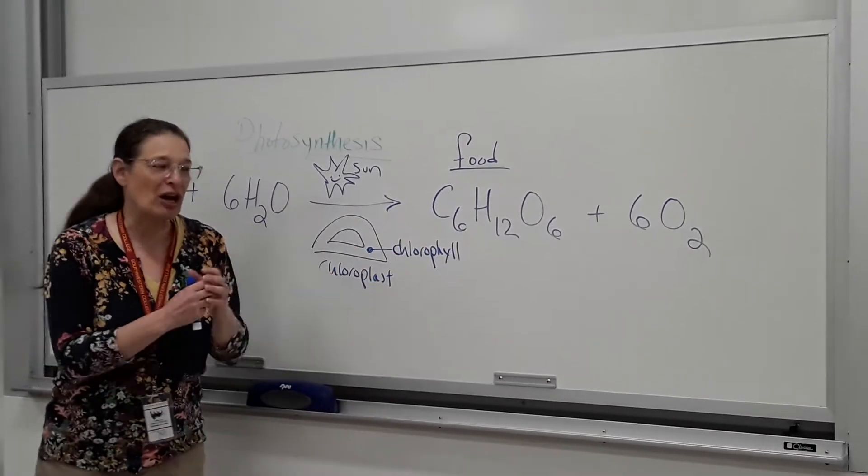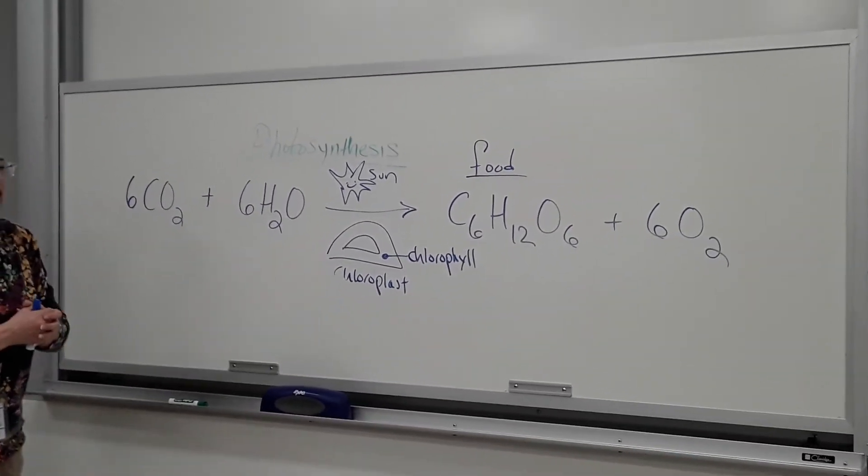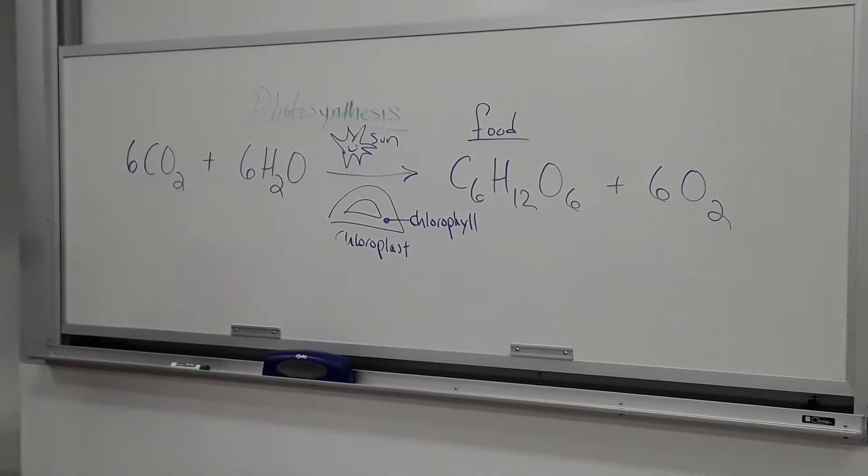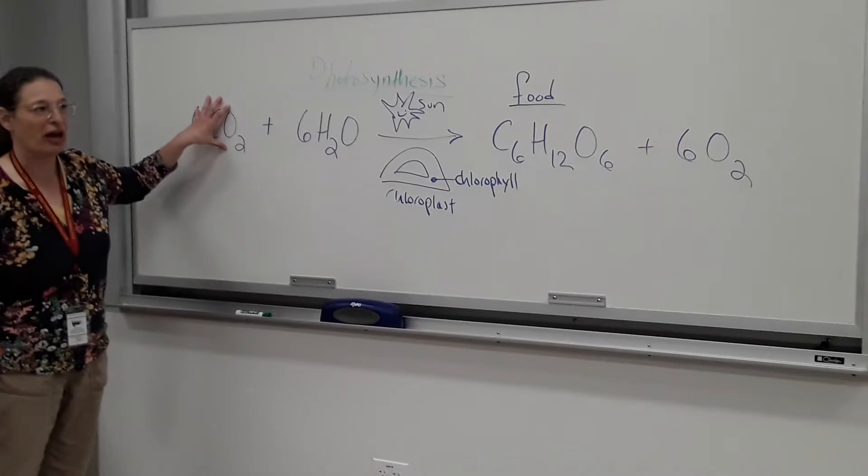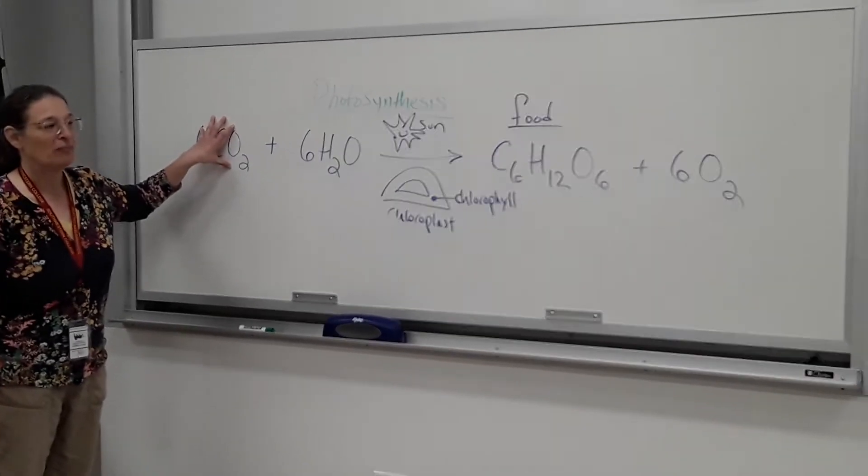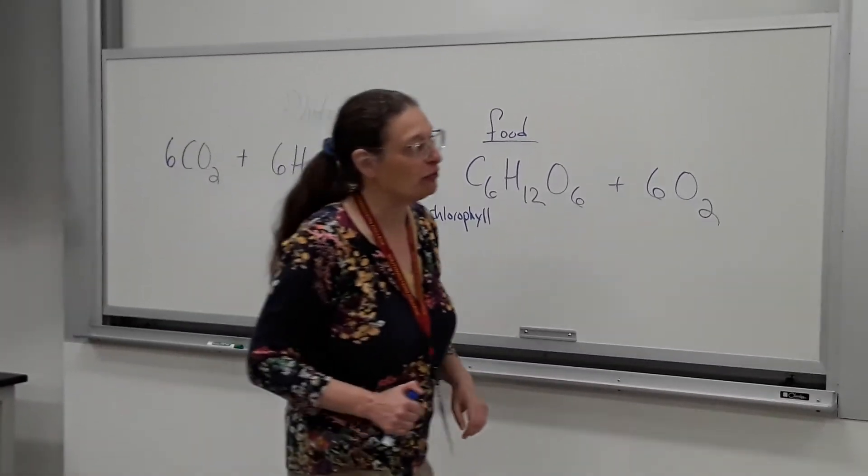We might not be able to see the plant getting bigger or fuller in the course of lab, but we know it makes food if we can see carbon dioxide disappear. When we made our little phenol red solutions, we blew into it and we put CO2 in it.